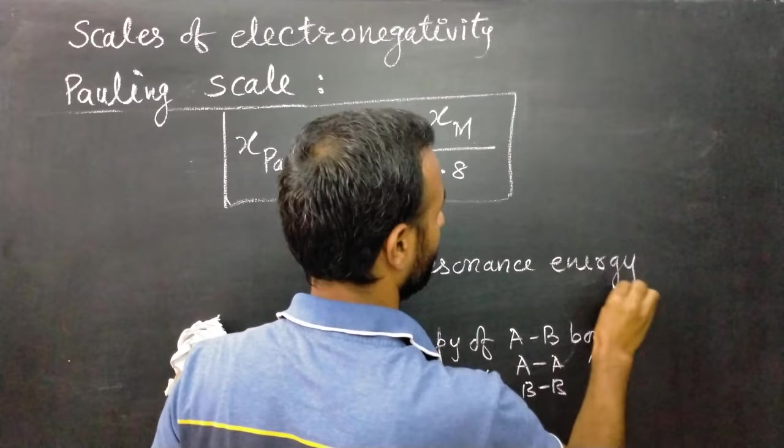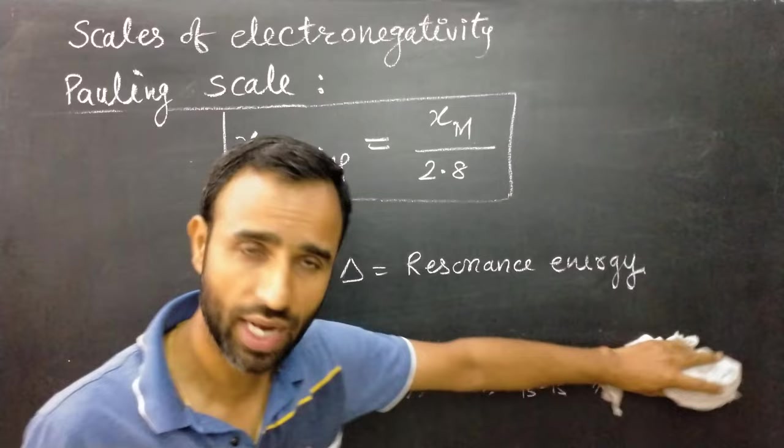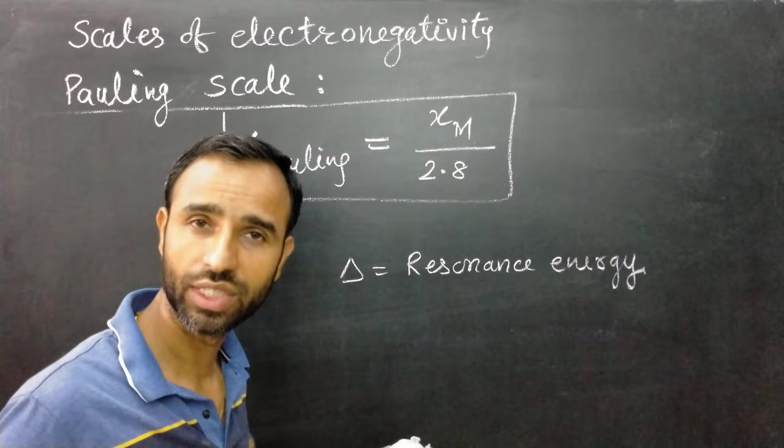Sometimes we can use the arithmetic mean, but the geometric mean is the most accurate one. That value is called resonance energy.